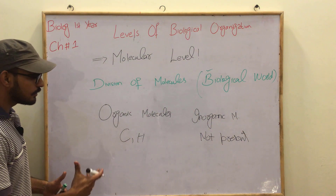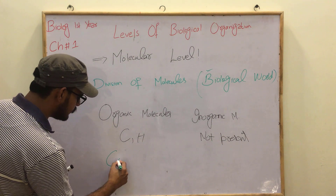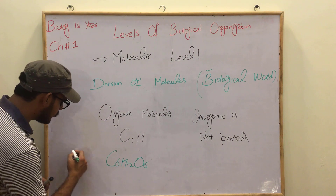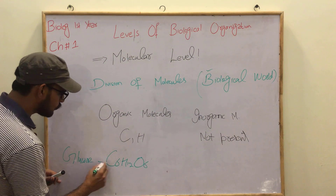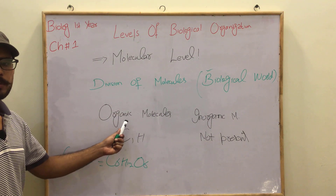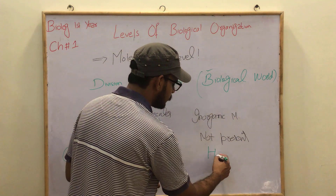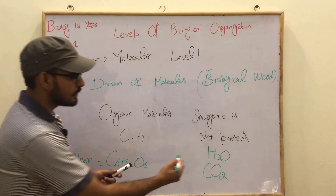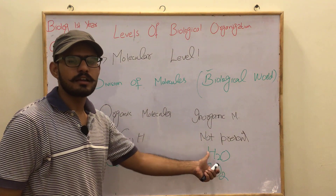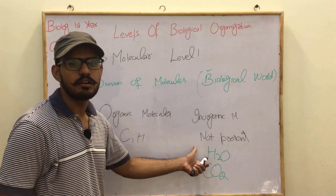If we talk about organic molecules, let's suppose C6H12O6 — you can see here there is carbon and hydrogen, so this is an organic molecule. Next, what are inorganic molecules? Take water as a first example — hydrogen is present but carbon is not present. That's why we can say that water is not an organic molecule — it is an inorganic molecule.